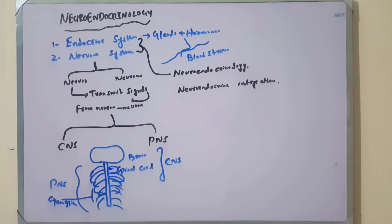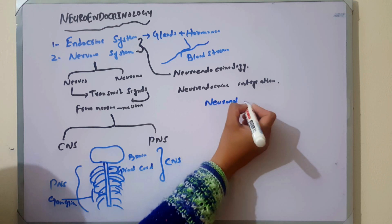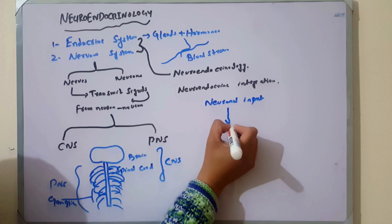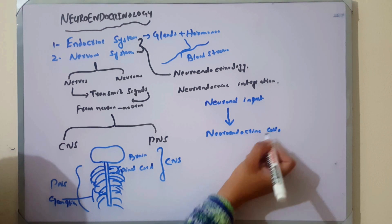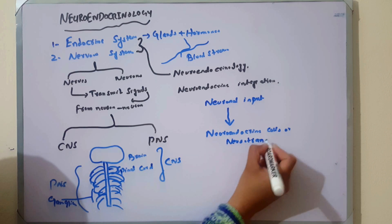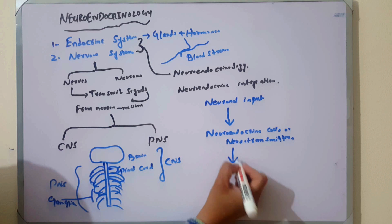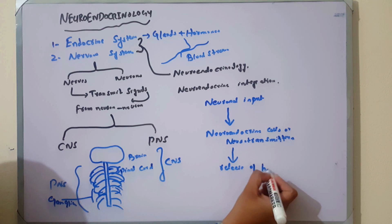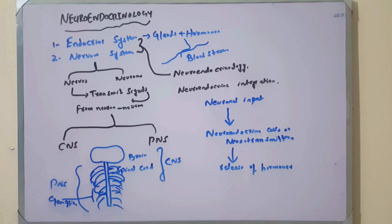In neuroendocrine integration, the neuronal input causes neuroendocrine cells or neurotransmitters to cause the release of hormones. This is the process in which the nervous system and endocrine system interact with each other for the release of hormones.